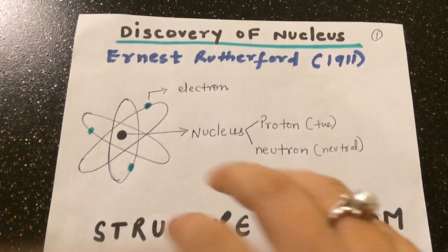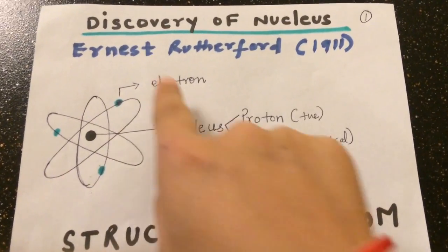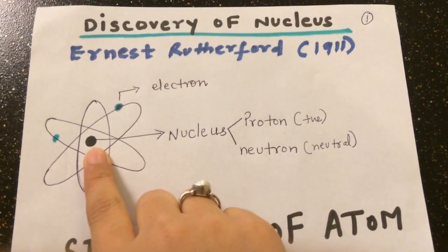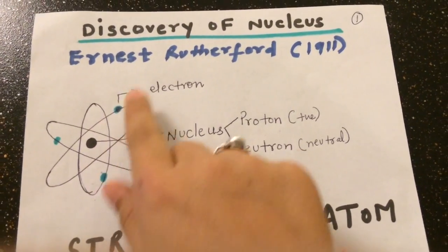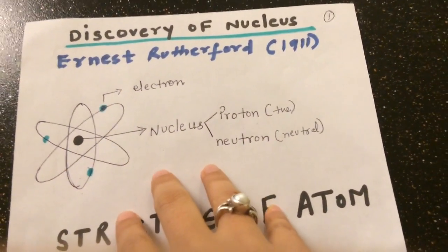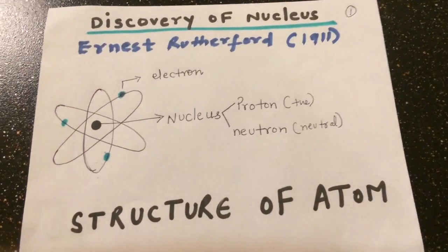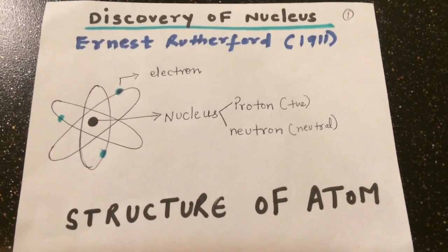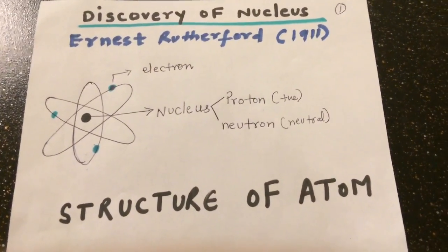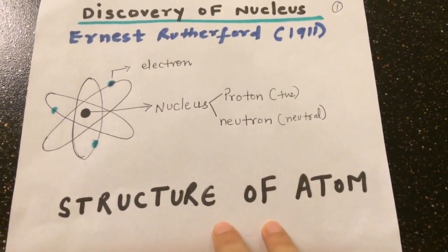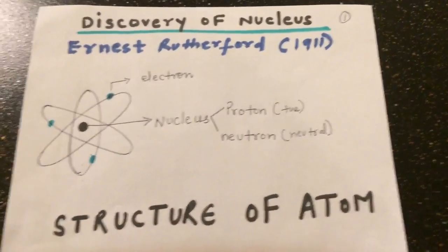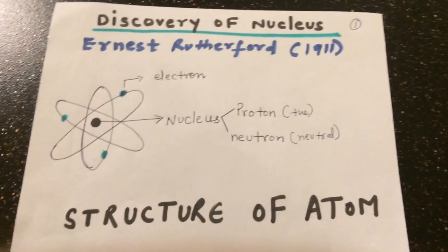Today we know the atom structure contains a nucleus in the center with electrons continuously revolving around it. But before this, there were different theories put forward by different scientists, for example Dalton's theory or JJ Thomson's theory. In this video I'm going to discuss only the Rutherford scattering experiment; you can check out JJ Thomson's theory or Dalton's atomic theory on my other videos.